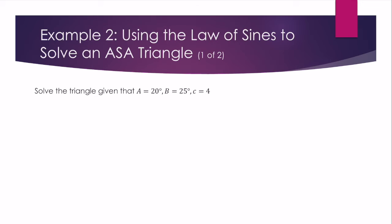So let's solve the triangle given that A is 20 degrees, B is 25 degrees, and c is 4. I always like to start with drawing a picture, even if it's not 100% accurate, it helps me a lot. So A is 20 degrees, this is little a. B is 25 degrees, this is little b. And C is unknown, but little c is 4.